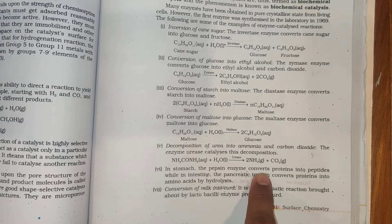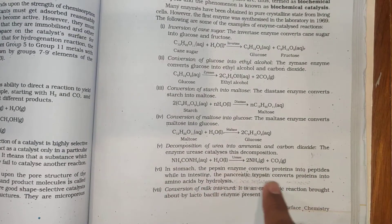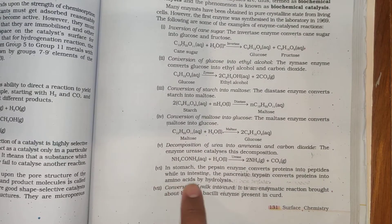In the stomach, the pepsin enzyme converts proteins into peptides, while in the intestine, the pancreatic trypsin enzyme converts proteins into amino acids by hydrolysis.